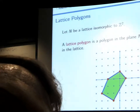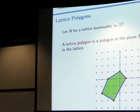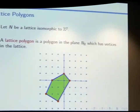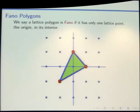This polygon lives in the plane and has vertices in our lattice, which is just in the plane. We like to call this plane N — N stands for Fano. A lattice polygon is Fano if the only lattice point that's strictly in the interior is the origin itself.